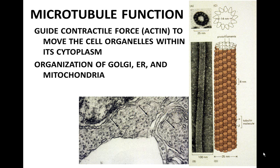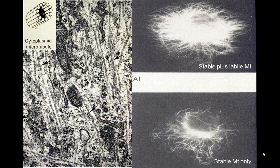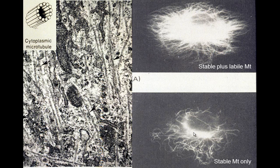Microtubules also organize a host of organelles in the cell and separate chromosomes during mitosis. We can see labile microtubules throughout the cell. A single microtubule is composed of alpha-beta tubulin units making one protofilament, with 13 protofilaments making a microtubule. The slide shows both stable and labile microtubules; the bottom image shows only the stable microtubules after the labile microtubules have been removed.